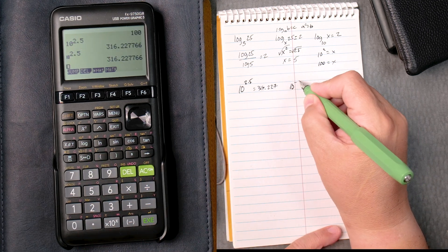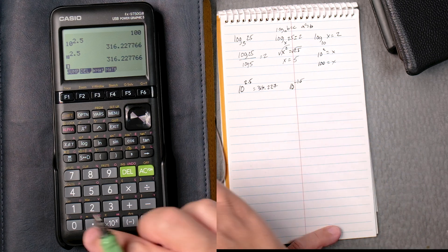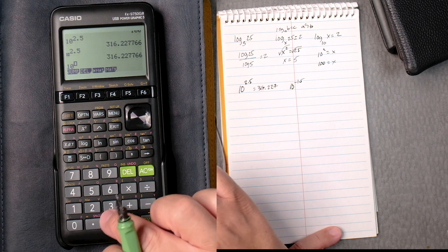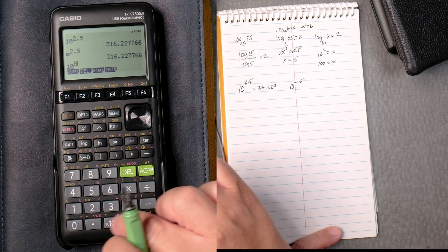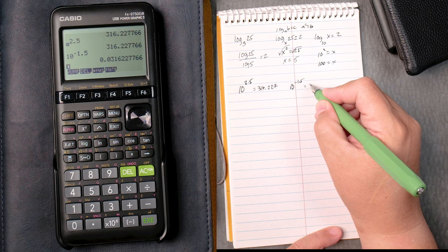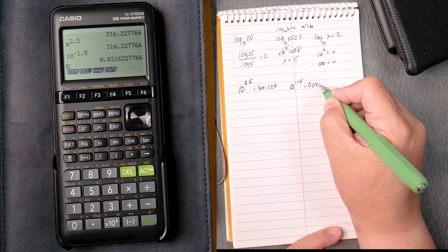10 to the minus 1.5, you say 10, carat key, negative 1.5, execute, and gives you 0.03162.